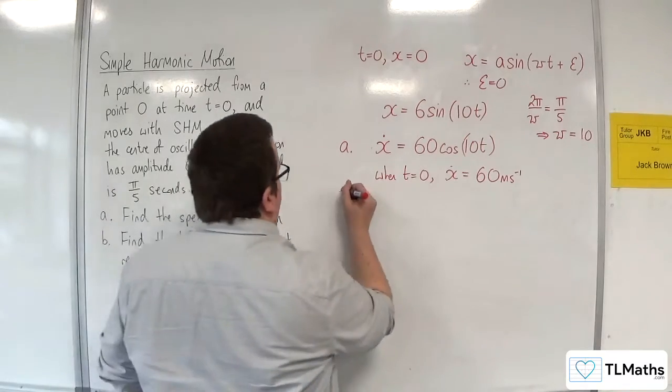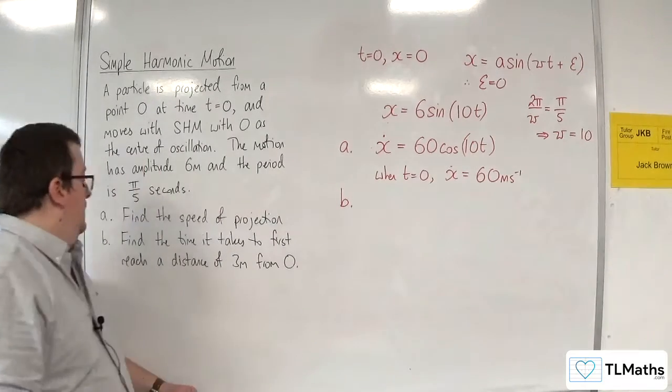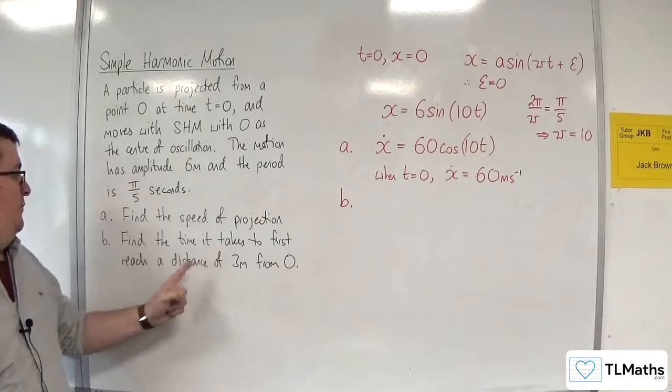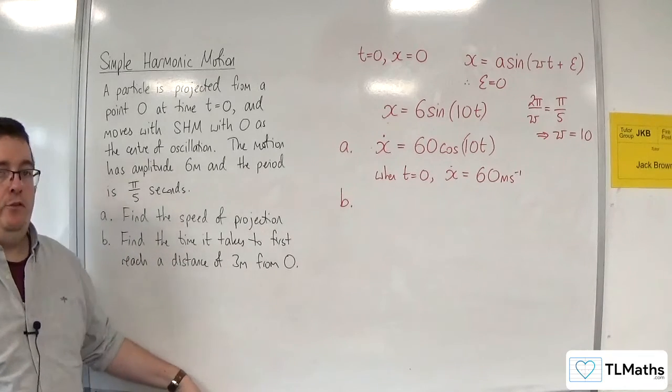Then for part B, find the time it takes to first reach a distance of 3 metres from O.